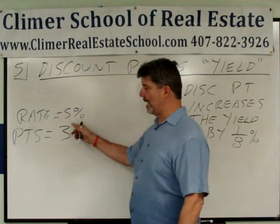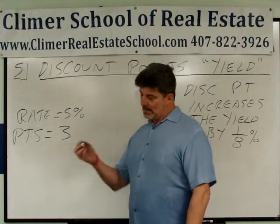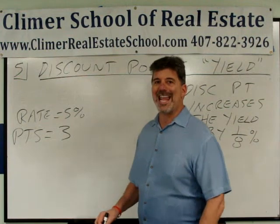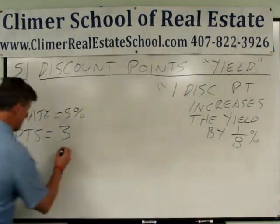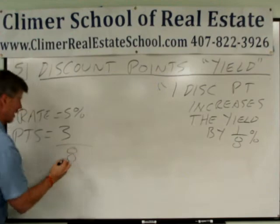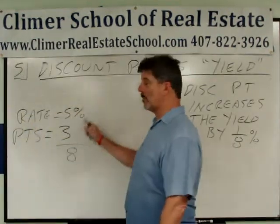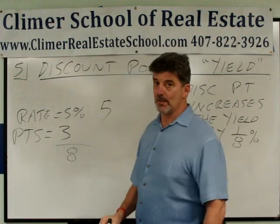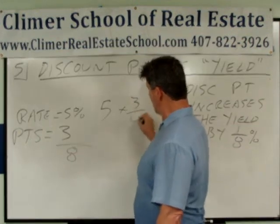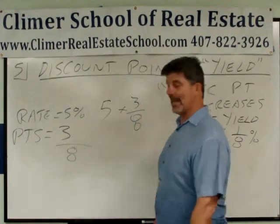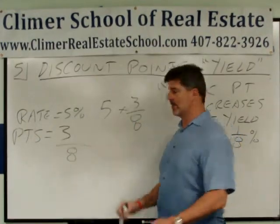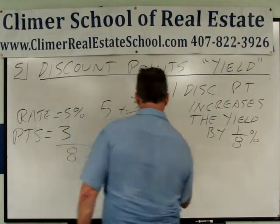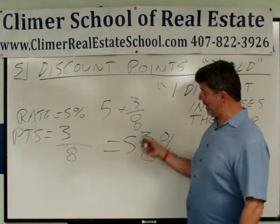Now the problem gives you rate and points. You take your pencil, and however many points the problem gives you, throw an eighth under it like this. Everybody see what I did? Then you take the rate that the problem gives you, add the points with the eighth under it that you just created, and add those together. The answer is five and three-eighths percent.